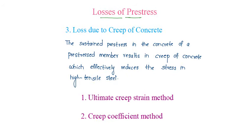Loss of pre-stress. The third loss is loss due to creep of concrete. The sustained pre-stress in the concrete of a pre-stressed member results in creep of concrete, which effectively reduces the stress in high tensile steel. Loss of pre-stress due to creep of concrete can be found using two methods.